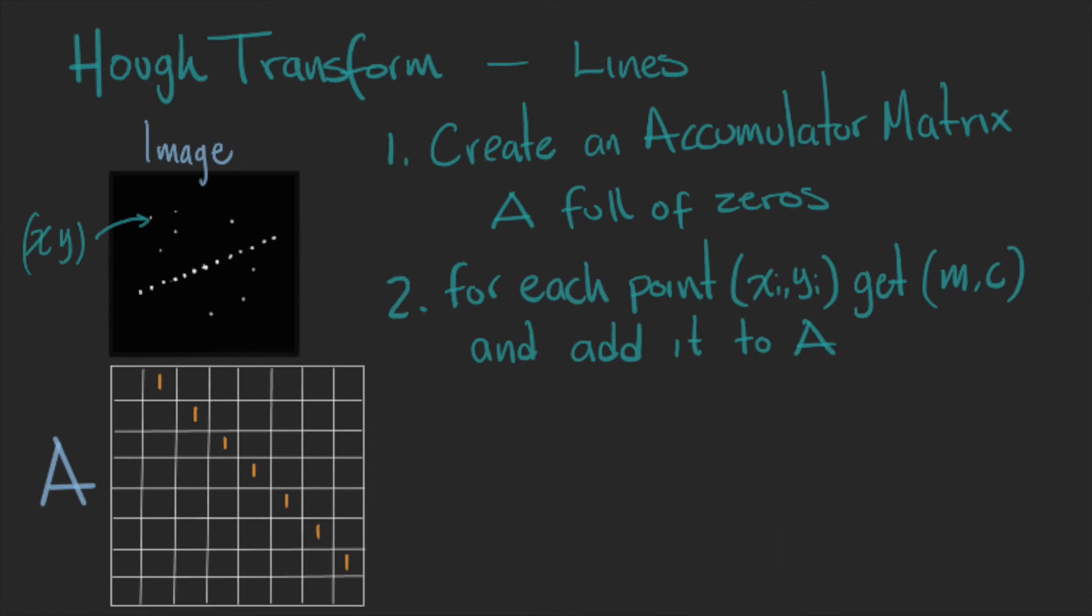So for each point x,y, we will plug the x and y values into the line equation. And we write the resulting line in the accumulator matrix. We basically add 1 to all the positions that correspond to the line.